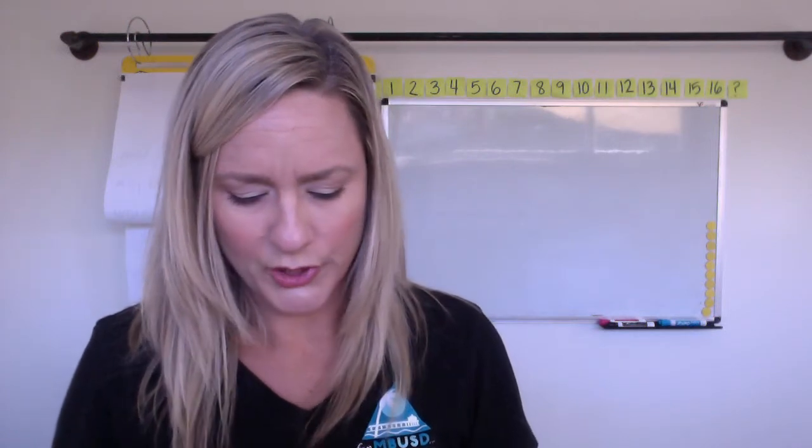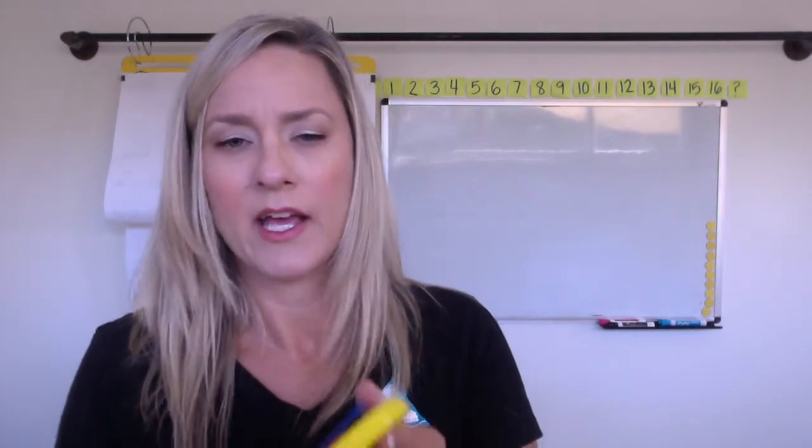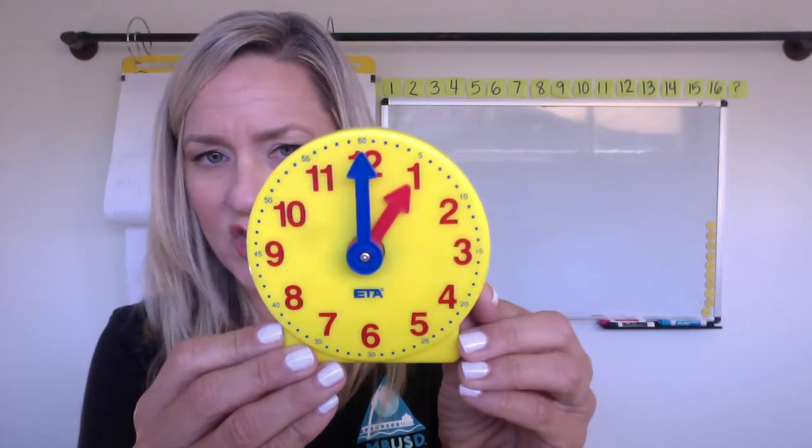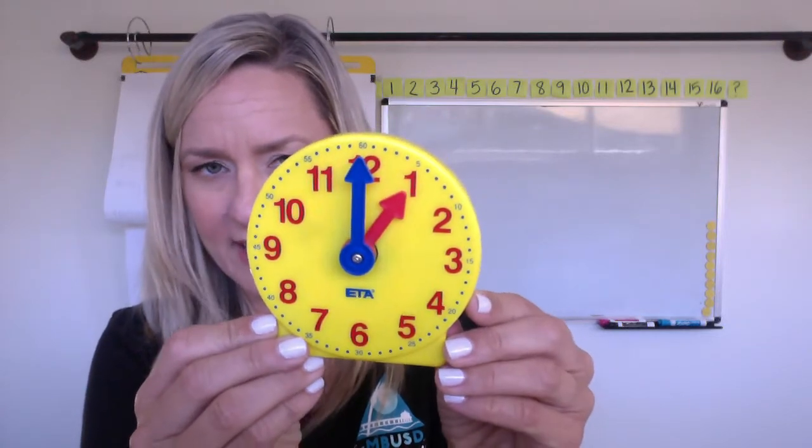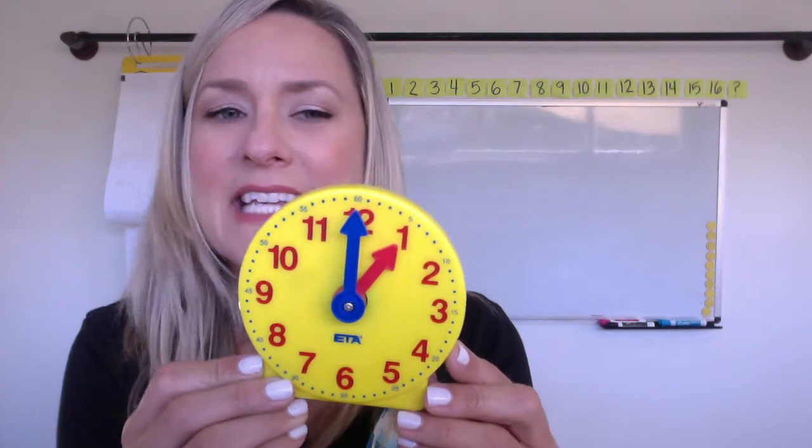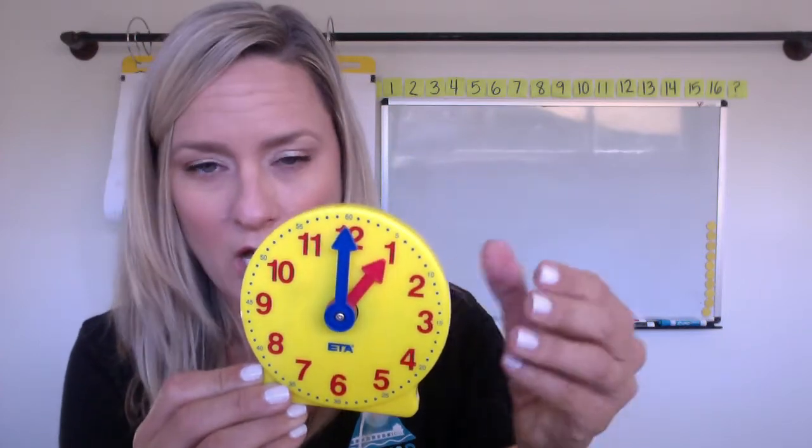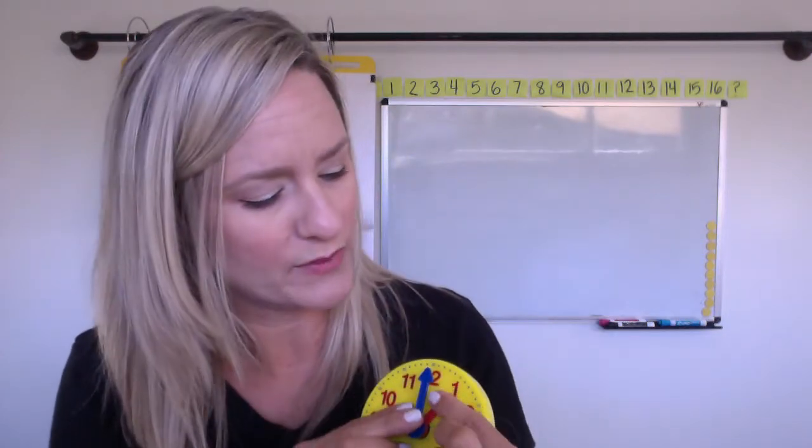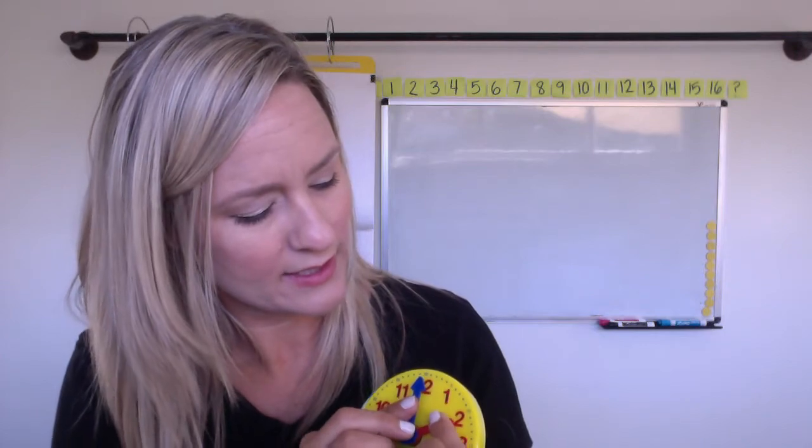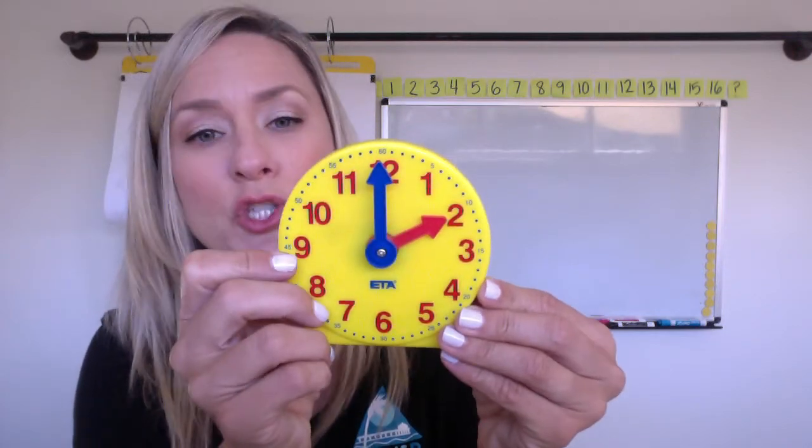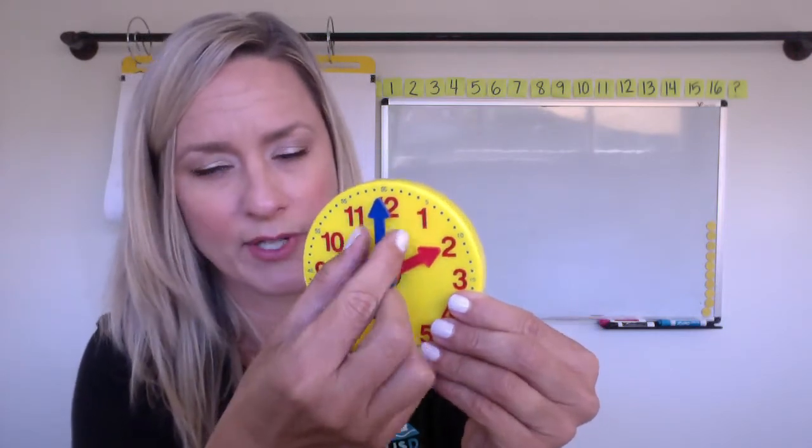Maybe you also knew that when the minute hand is pointing straight up like this, and it's pointing at the 60, that means it's exactly one o'clock. Or if I moved the hour hand, it's exactly two o'clock when this is pointing straight up.